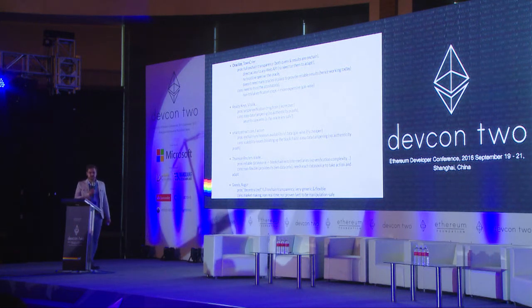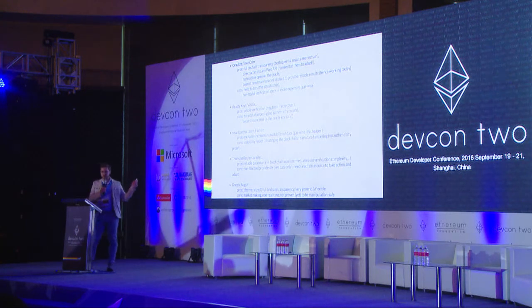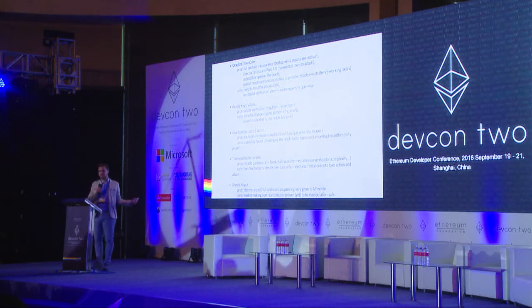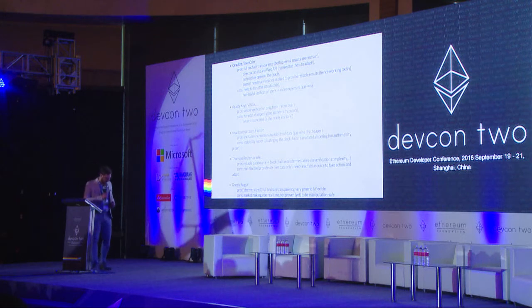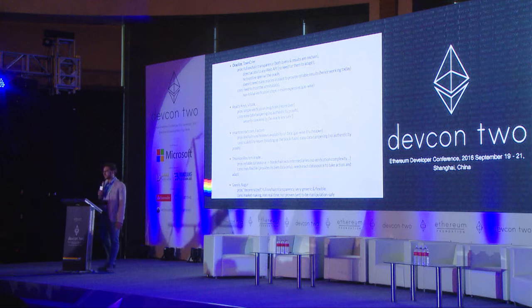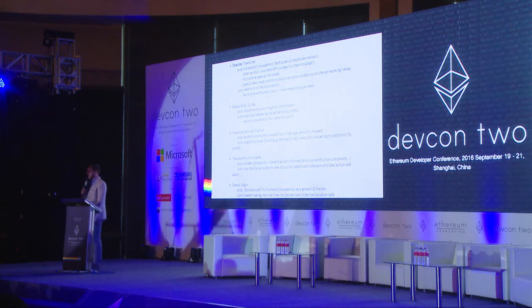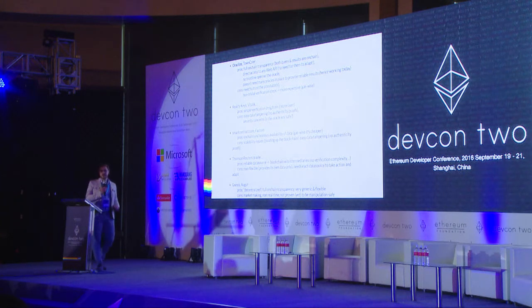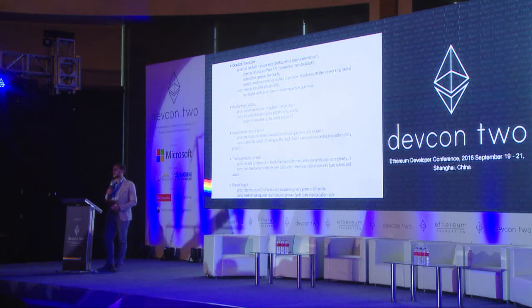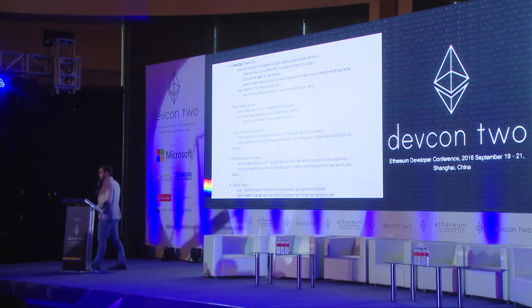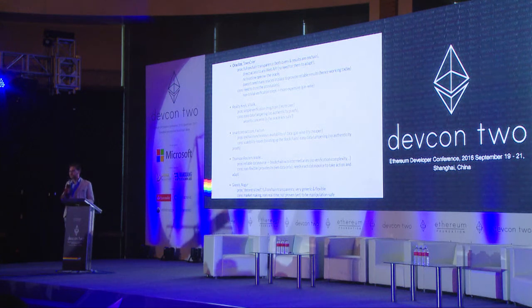We'll focus during this presentation on the first approach listed in this slide. This is the one used by Oracleize, and as we speak, this is the most widely used on the public blockchain. One of the pros of this approach is that it's fully transparent — both the query and the results are permanently stored on the blockchain. Another advantage is that we can use any data source available on the internet, so any web API potentially, since there is no need for them to adapt to the blockchain — they have no knowledge of the blockchain and they don't have to.